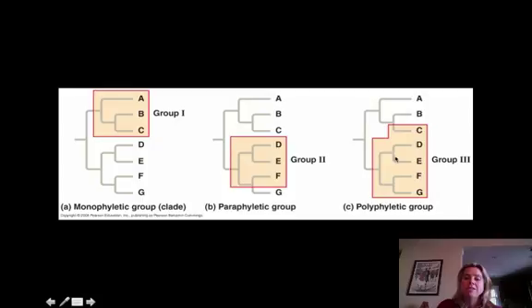Then the last type is going to be called a polyphyletic group, and that's going to be where you have an ancestor and all of its descendants plus an extra one that's kind of an outlier. And so if we're talking about C, D, E, F, and G, that would be called polyphyletic because of the C that we've included in there. So that's just ways that you can talk about groups of organisms and how that works.